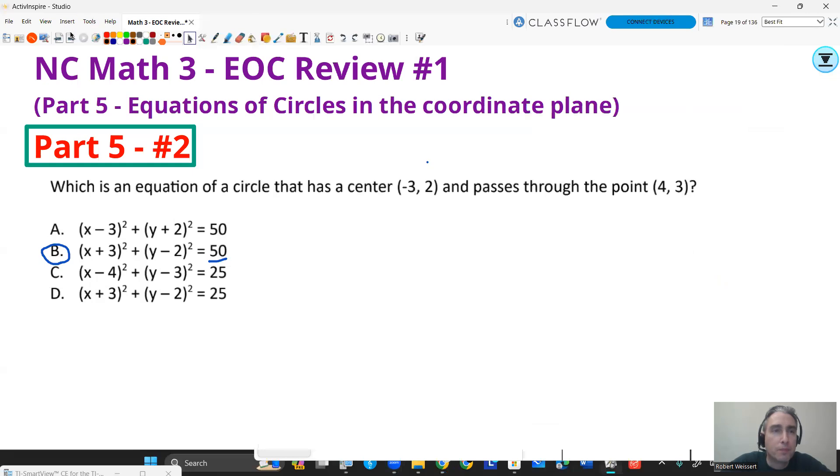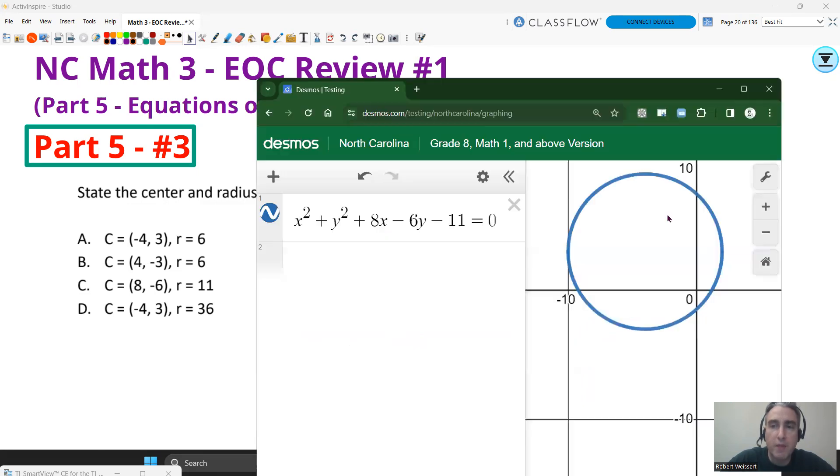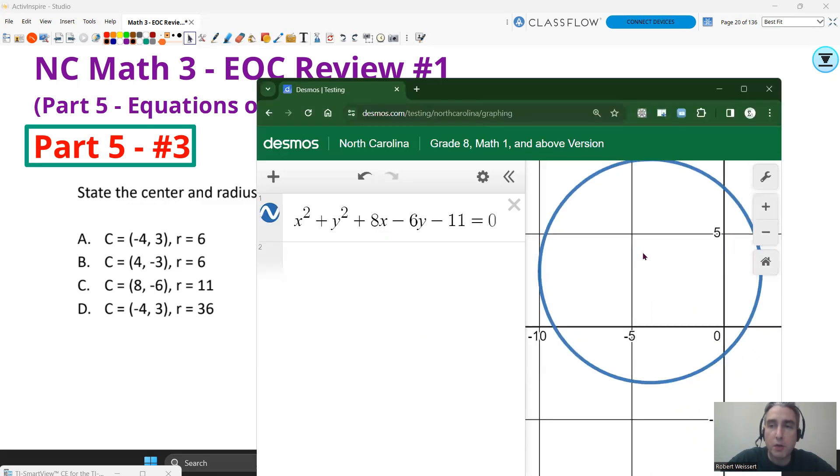Let's go on to question number 2. Or excuse me, question number 3. This question says, state the center and the radius of the circle: x² + y² + 8x - 6y - 11 = 0. Now, you can type that in. And you might be able to estimate the center and the radius that way. And if I do that, the center is going to be, it's going to be in quadrant 2, it looks like.